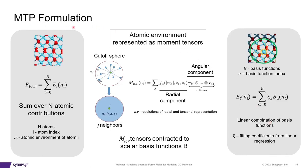Let's look at how moment tensor potentials are formulated. The total energy of the system is written as the sum of atomic energy contributions — an approach used in most machine-learned force fields. Atomic energy is not a physical quantity but a mathematical construct needed for the regression algorithm. Every atom is represented by its atomic environment within a cutoff sphere of a user-chosen radius, where there are j neighbors distributed within that sphere. Cartesian information is not useful for representing geometries because it is not invariant to symmetry operations, so a rotationally, translationally, and permutationally invariant representation — called descriptors — is needed.